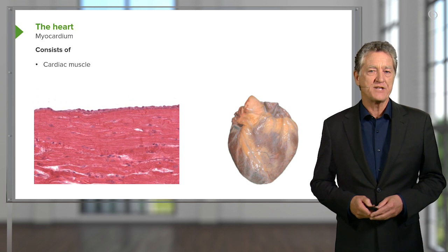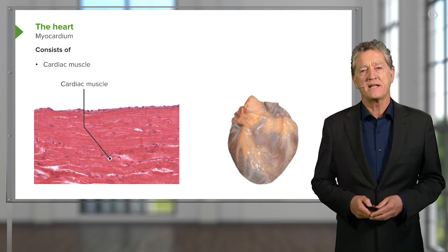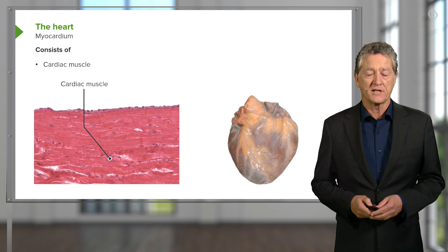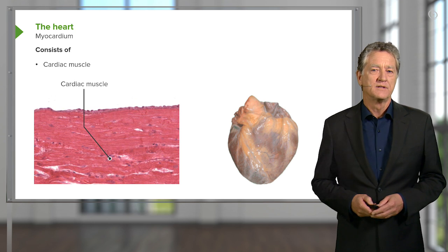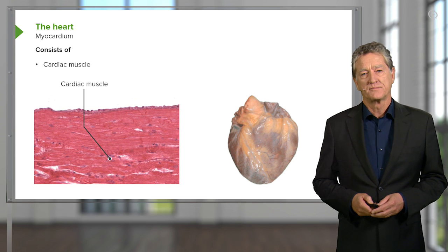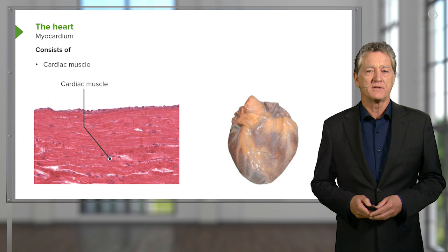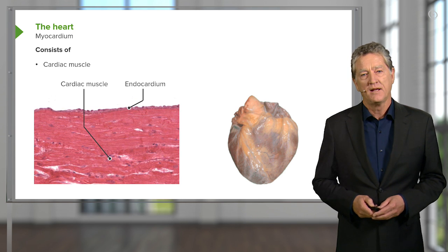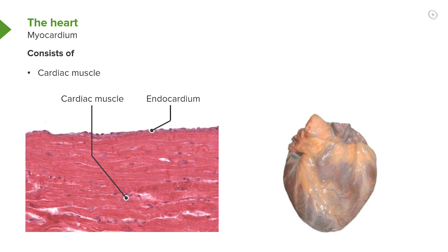The myocardium consists entirely of cardiac muscle with some connective tissue skeletal components and blood vessels, but it's mostly cardiac muscle. That's the pump component of the heart. It is lined on top, of course, by endocardium.